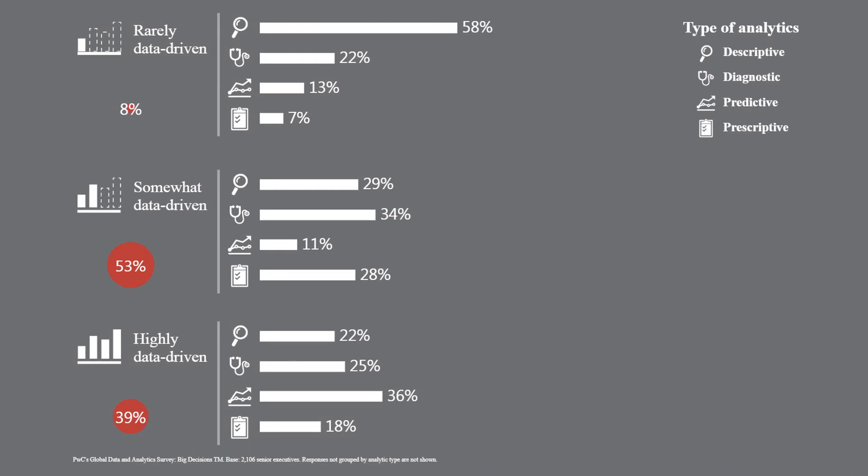What types of data analytics do companies choose? For the Global Data and Analytics Survey, Big Decisions, PwC asked more than 2,000 executives to choose a category that describes their company's decision-making process best. The C-Suite was questioned on what type of analytics they rely on most. Descriptive analytics dominates in the rarely data-driven decision-making category at 58%. Diagnostic analytics tops the list in the somewhat data-driven category at 34%, while it is closely followed by descriptive analytics at 29%, and prescriptive analytics at 28%.